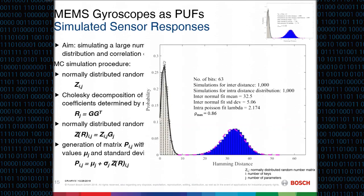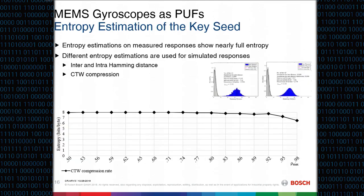The intra-distance for the simulated data shows a similar shape to that for the measured data. For the entropy estimation, we used state-of-the-art CTW compression, first on our measured data where the results showed incompressibility, likely affected by the limited bit string length. For the simulated data, the CTW compression rate across different correlation upper limits shows that up to a correlation upper limit of 0.92, we have almost full entropy.